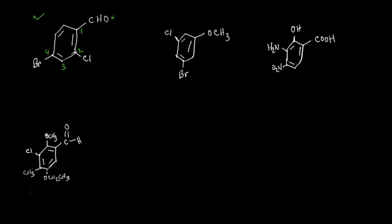We can number it one to six going one direction, or we can number it the other way. In the first case we get numbering two and four — at positions two and four we have our chloro and bromo substituents. In the other direction we get four and six. We have to ensure that we always get the lowest numbers when naming an organic compound, so four and six will not be valid here. We'll go with two and four.